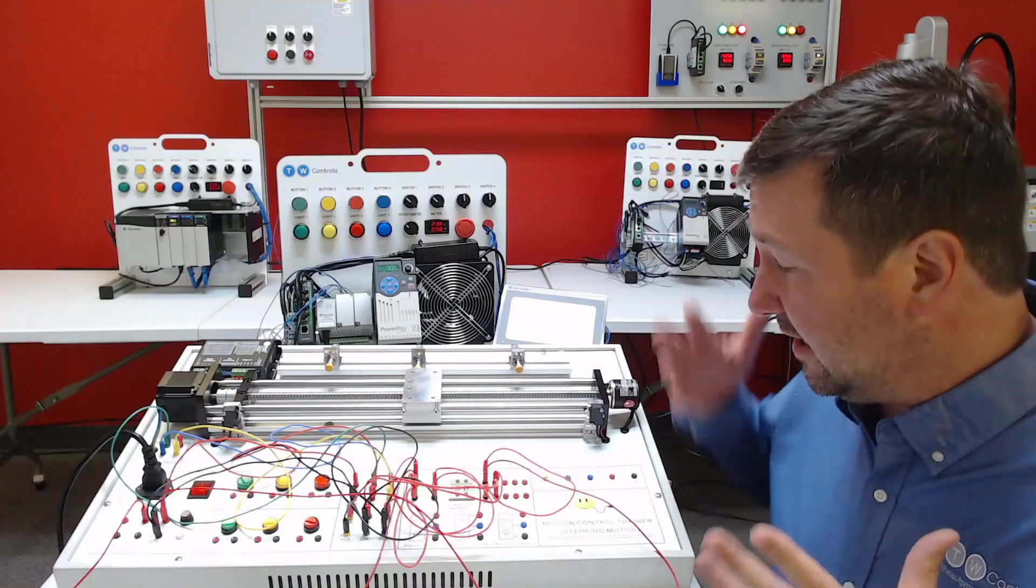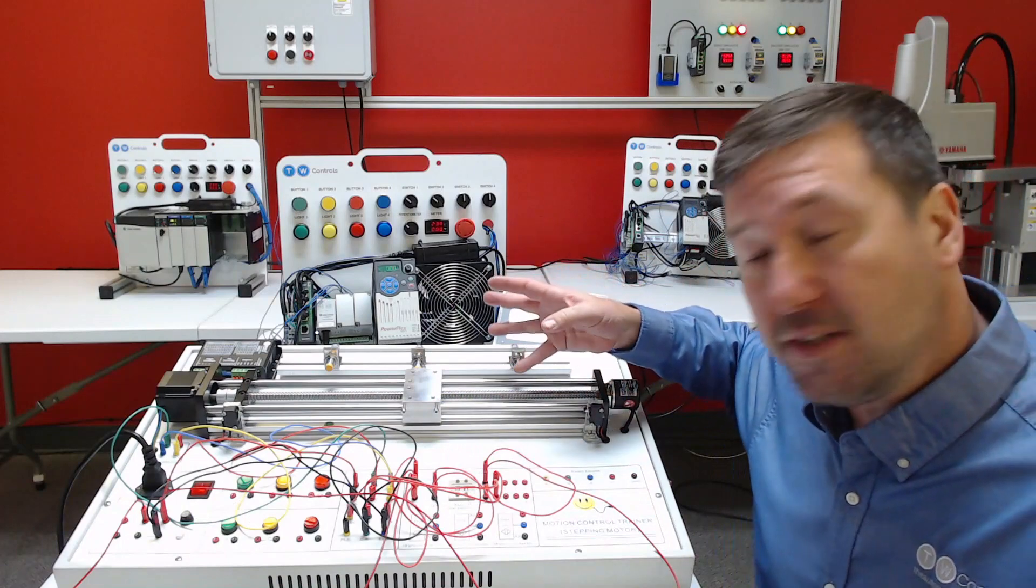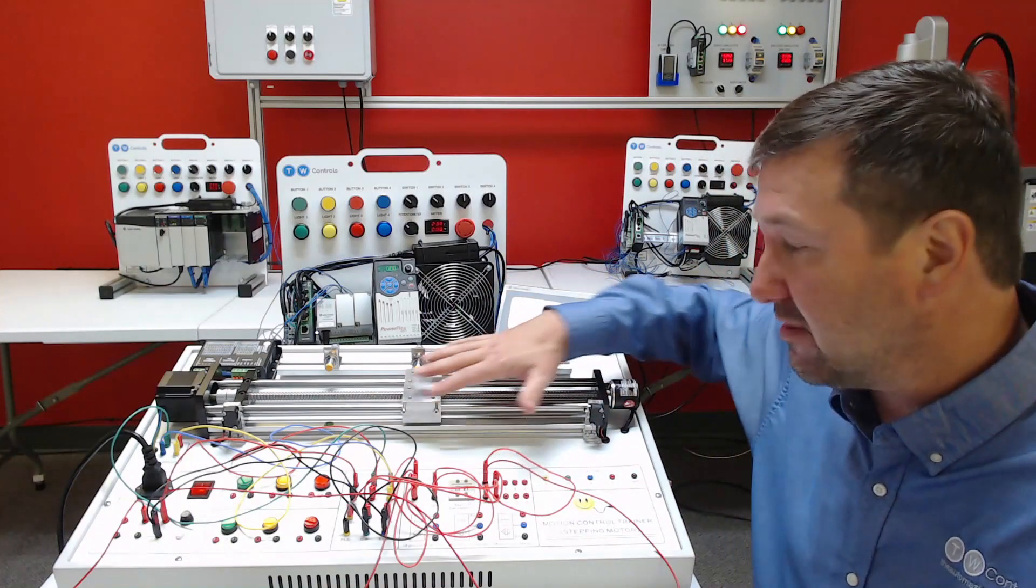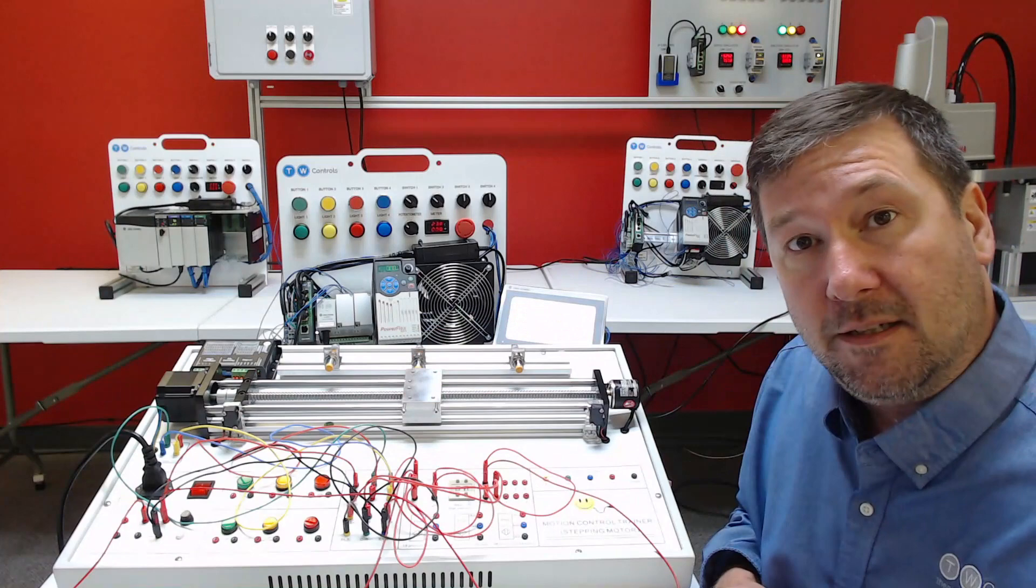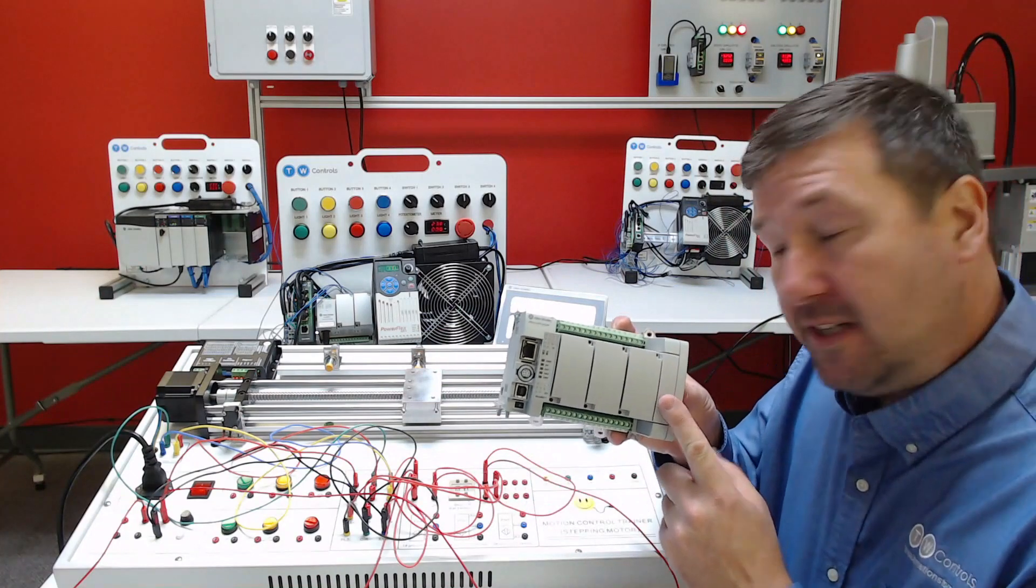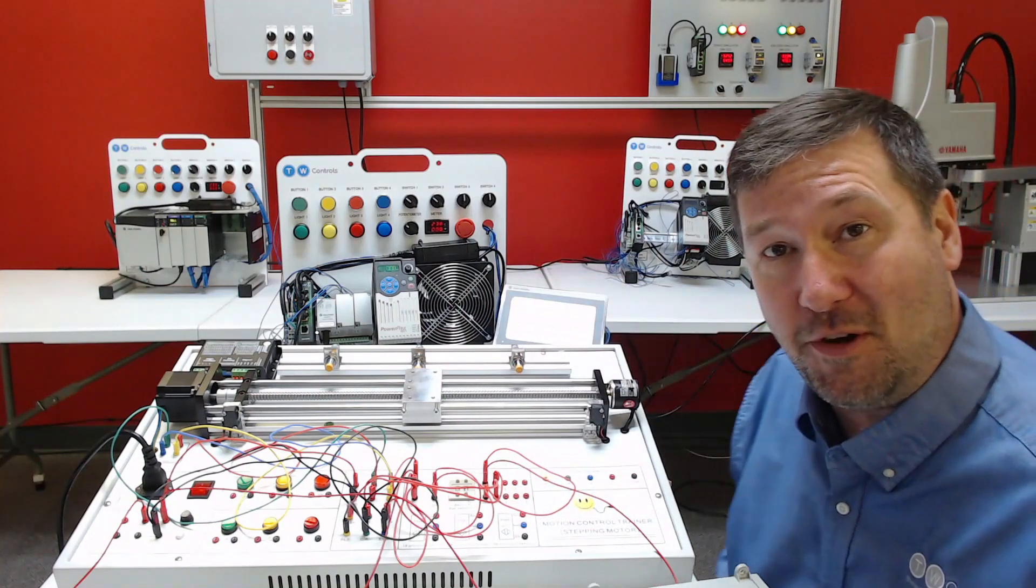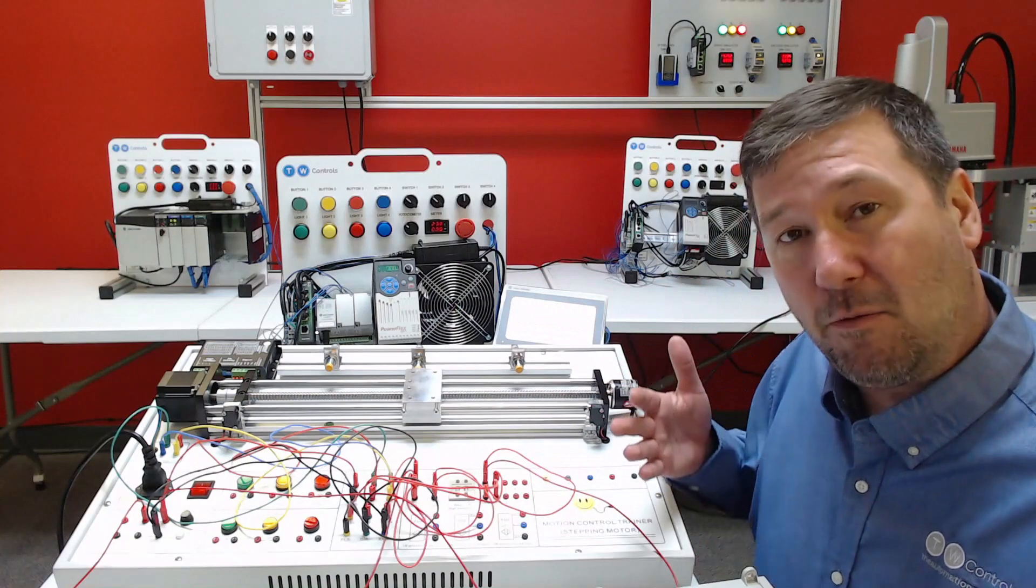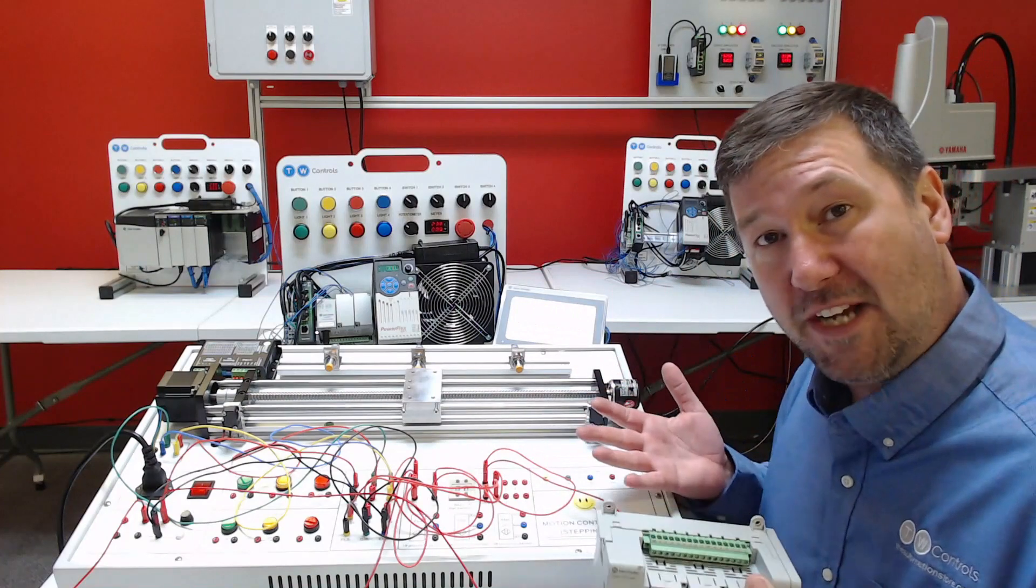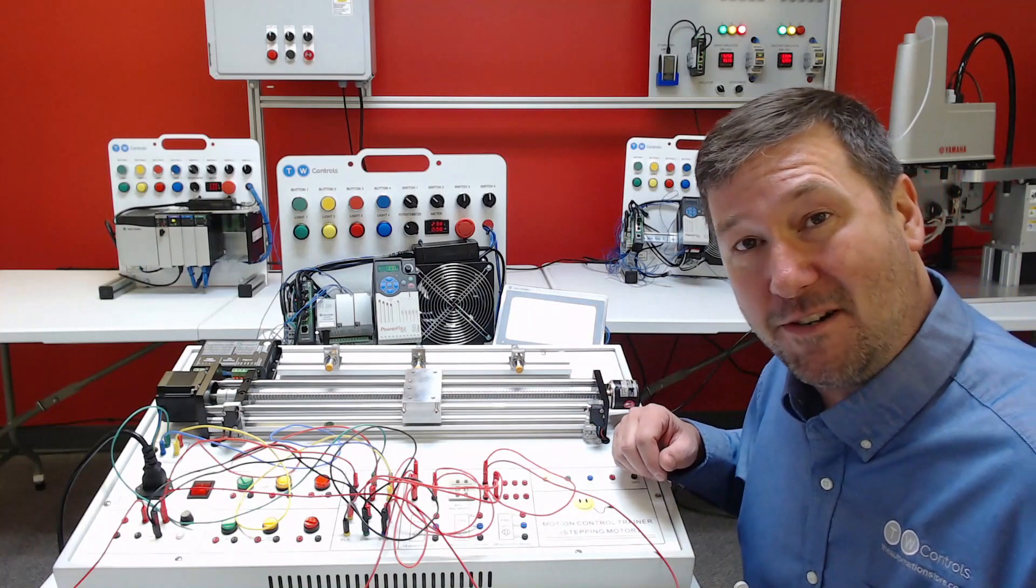So using this pulse and this direction we can control the stepper motor and position this really anywhere we want. In our next video we're going to start connecting our Allen Bradley Micro 850 PLC to this so we can start doing some motion control. Hope this video has helped you understand a little bit about what it means to have pulse and direction and how a stepper works. Please hit that like button and subscribe to our channel.